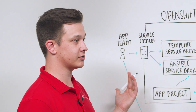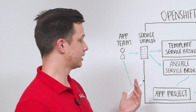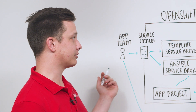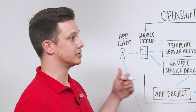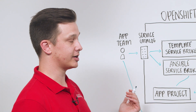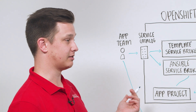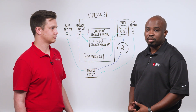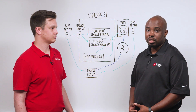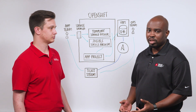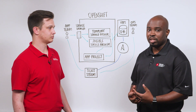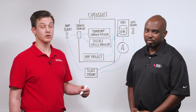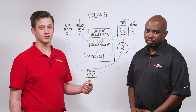This takes your provisioning time down from days to minutes, so your app teams can work in complete autonomy from your ops teams and focus on delivering business value. It also frees up the operations team to write new playbooks and innovate on new infrastructure. If someone wanted to bring this into their organization, they can contact their Red Hat account executive or go to redhat.com/services.